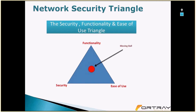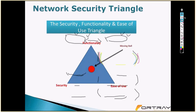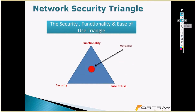Think of a ball placed on the triangle. If I move the ball to the security corner — to make the network very secure — it moves far away from functionality and ease of use. No network can be 100% secure, but placing the ball there makes it more secure while reducing functionality and usability.